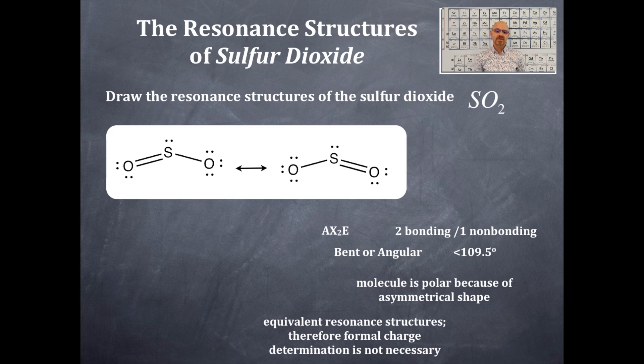I want you to notice something else on this here and that is sulfur dioxide does not have brackets around the Lewis dot structures unlike the acetate ion on the previous video. That is because sulfur dioxide does not have a charge, therefore you don't need the brackets.